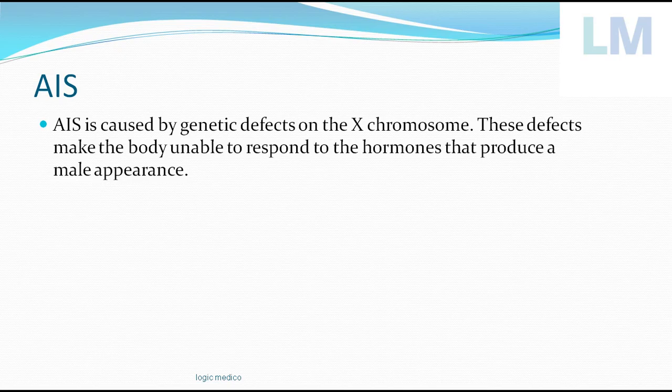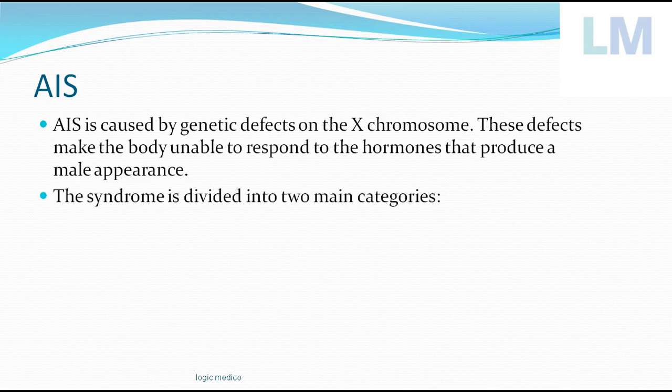At its core, AIS is a genetic defect affecting the X chromosome. These defects make the body unable to respond to male hormones — the androgens. So instead of appearing physically like a male, the physical characteristics become those of a female. There are two categories of this syndrome.